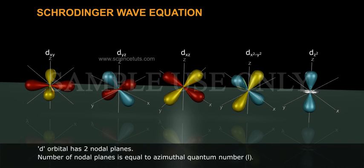D orbital has two nodal planes. Number of nodal planes is equal to azimuthal quantum number, L.